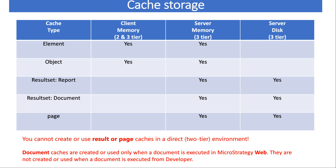But if you talk about the result set - whether it's a report cache, document cache, or even page cache - they can be created only at the server side. Server side means where your intelligent server resides. Client side always uses memory to save element cache and object cache. But server side it can be either memory or your hard disk - HDDs, whatever hard disk drives are there. This gives us the statement that you cannot create or use result or page cache in direct connection, client connection, or two-tier connection.